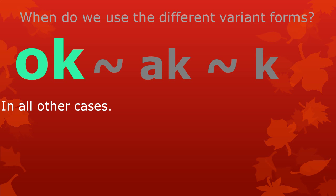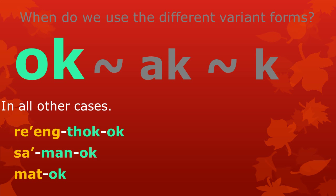The variant form Ok is used in all other cases — that means when the previous meaningful part is not Cha or does not end in A or A-raka. Examples include the words Reingtokok, Saakmanok, and Matokok.